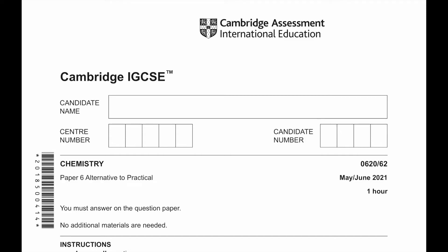Hello everyone. Today we'll be solving Cambridge IGCSE Chemistry, Paper 6, Alternative to Practical, May June 2021, Paper 62.